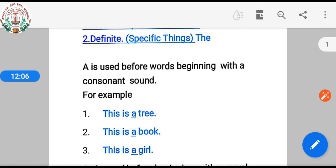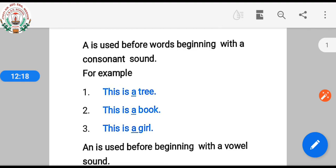Where we have to use 'a' or 'an': 'a' is used before words beginning with a consonant sound. For example, this is a tree, this is a book, this is a girl.